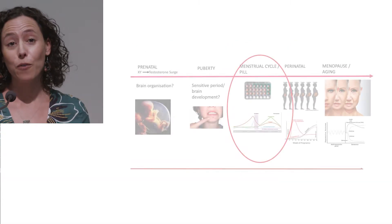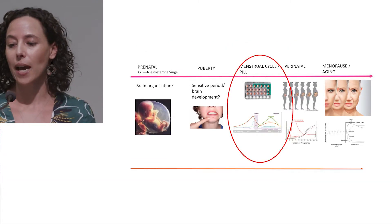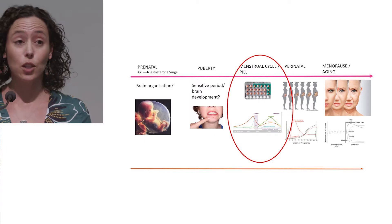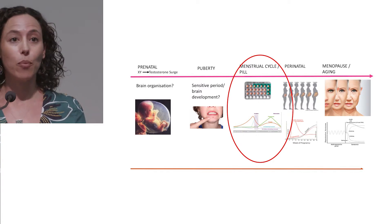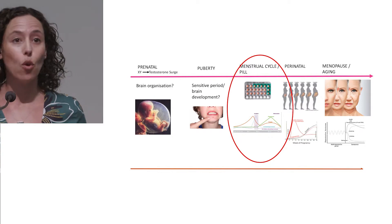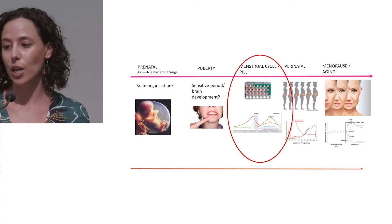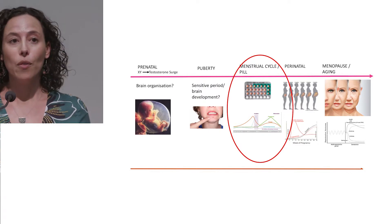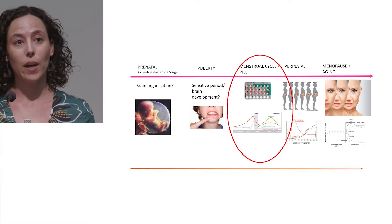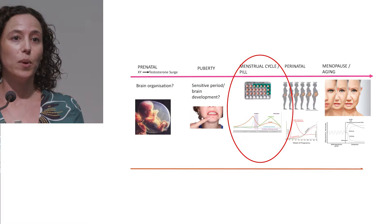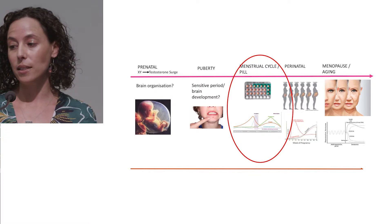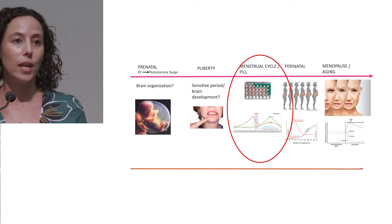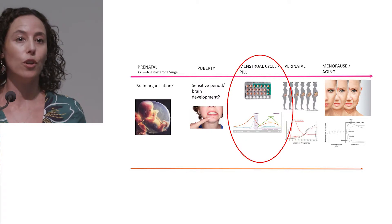After the first year of life, the HPG axis that regulates sex hormones remains relatively dormant until puberty, which is the second period where the brain is sensitive to hormonal changes. Following puberty for females, there's a natural menstrual cycle where hormones fluctuate, or for some women a contraceptive pill which changes the natural menstrual cycle and adds in synthetic hormones. Both of these provide an opportunity to look at either exogenous or endogenous hormones and their impact on mood and cognition.